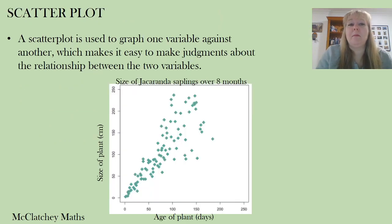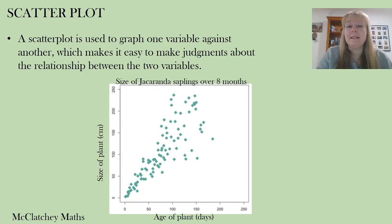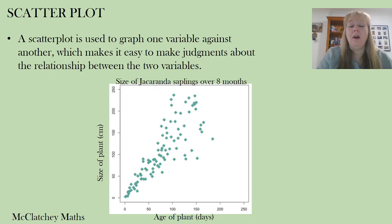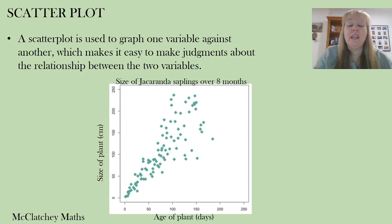Scatter plots are our primary means of comparing two different data samples. We compare them by graphing one variable on the x-axis — in this example we're looking at the ages of different plants over a number of days, up to about 200 days — and then on the y-axis we look at how big that plant was as time went on.